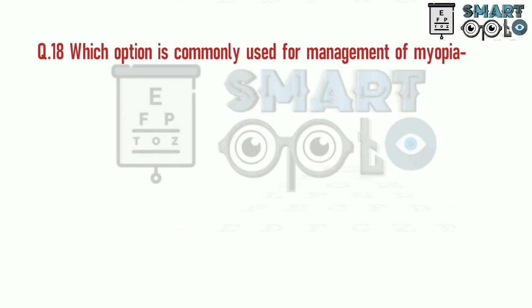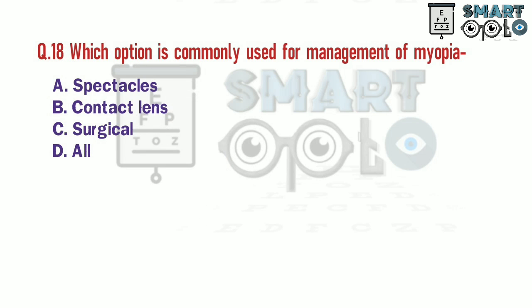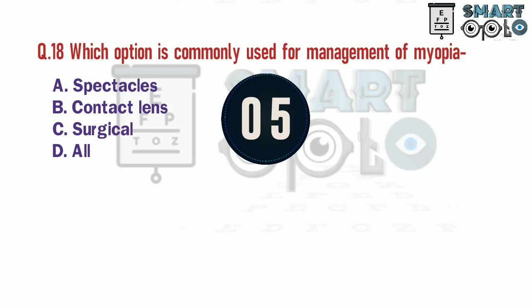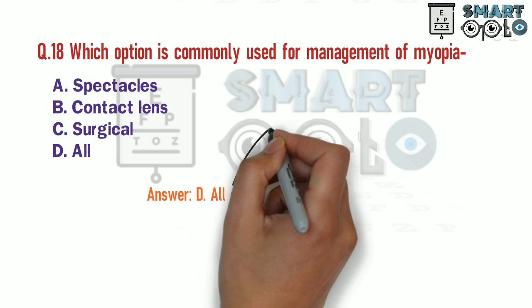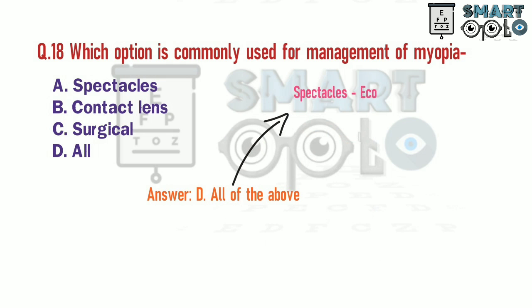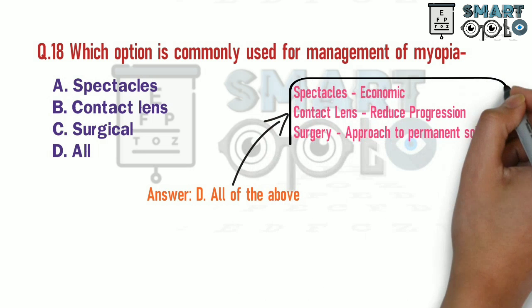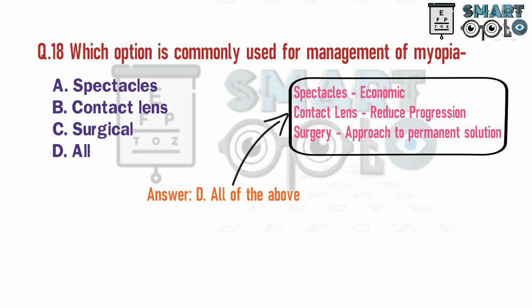Q18. Which option is commonly used for management of myopia? A. Spectacles. B. Contact lenses. C. Surgical. D. All. Spectacles are considered economic, while contact lenses help reduce progression, and surgery is an approach to a permanent solution for correcting myopia.